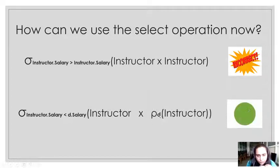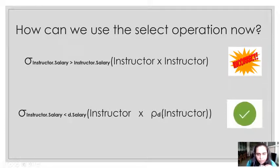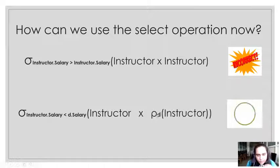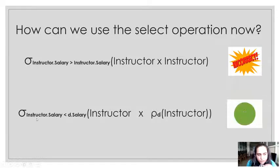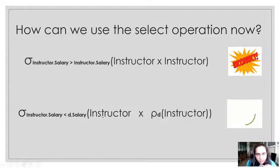In order to avoid this ambiguity, we use the rename operation. For the rename operation, we use the symbol rho — a Greek symbol like sigma. Next to rho in subscript, we write a new name for the ambiguous relation. We rename the second instructor to the letter D, where D stands for duplicate. Now the first condition is instructor.salary and the second is D.salary, so we know which relation each refers to.